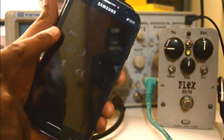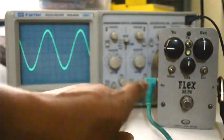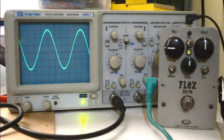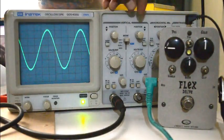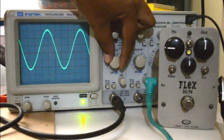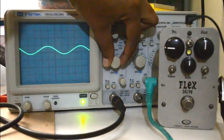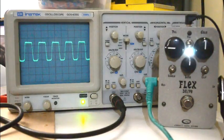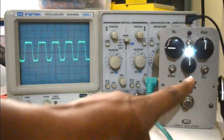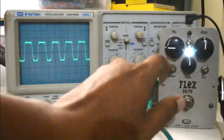It's feeding a sine wave into the pedal. From the pedal it's going into the oscilloscope. So this is how the signal looks with the pedal off - that's a 1 kilohertz signal that we have right there. I'm going to make it a little smaller.